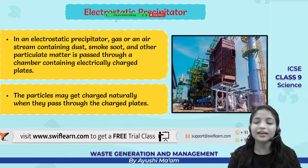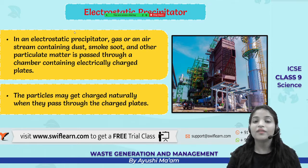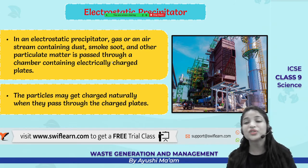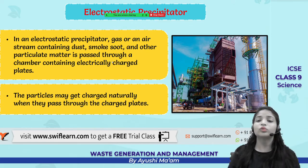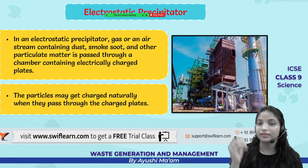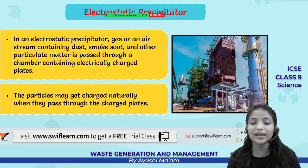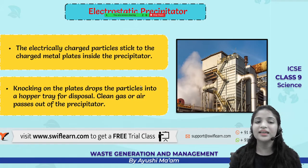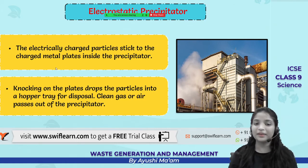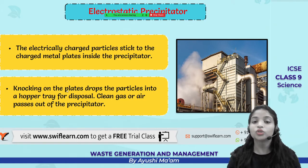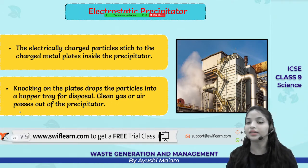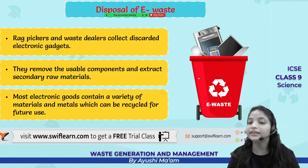Then we have the electrostatic precipitator. This is a big machine — here we pass the gas that has dust, smoke, and soot, kyunki carbon dioxide ki gases nikalti hain. Woh sab electrically treat hoti hain — unko treat karaya jaata hai charged plates se. Jaisi hi woh electrical charged plate se stick ho jaati hain — kyunki unme charge acquire ho jaata hai — toh jaise hi woh metal plate se stick hoti hain, clean gas precipitator se nikal jaati hai. This is how clean gas is released from the electrostatic precipitator.